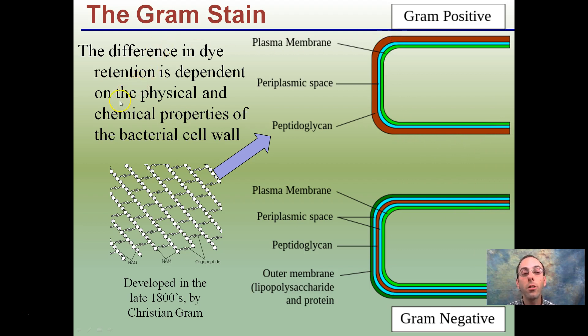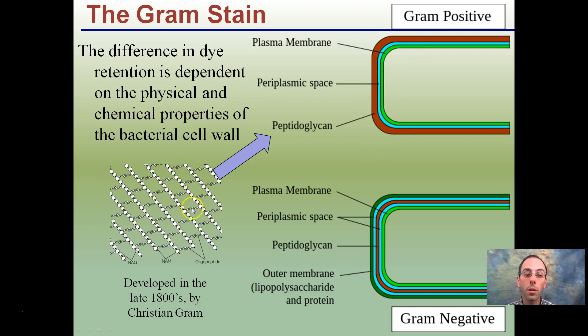The difference in dye retention is dependent on the physical and chemical properties of the bacteria cell wall — in this case, the exterior portion. This gram stain was developed in the 1800s by someone by the last name Gram, and that's where it gets its name from.